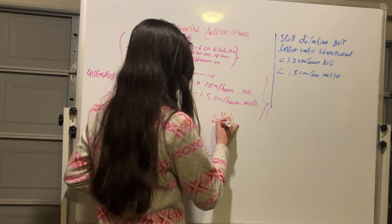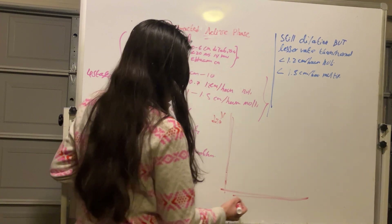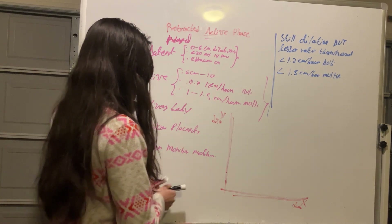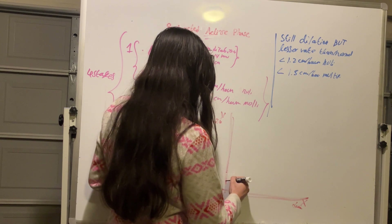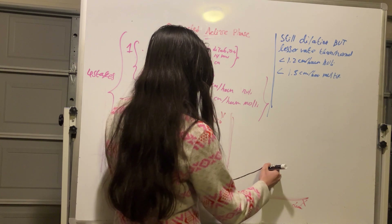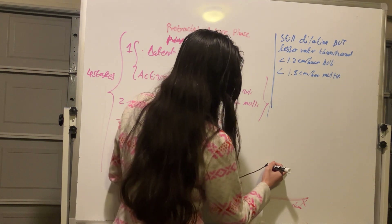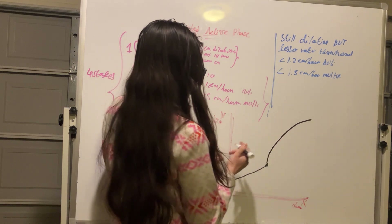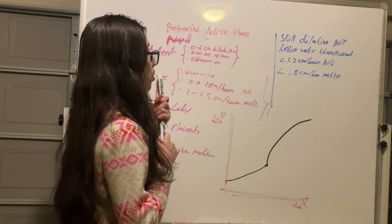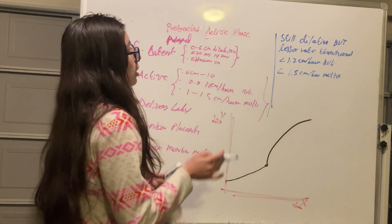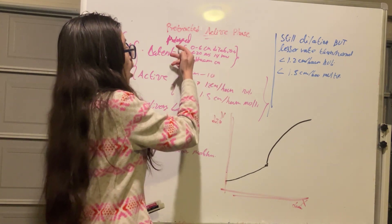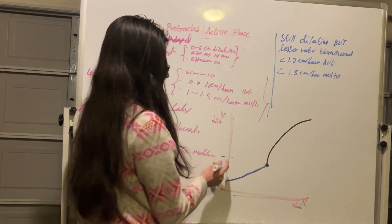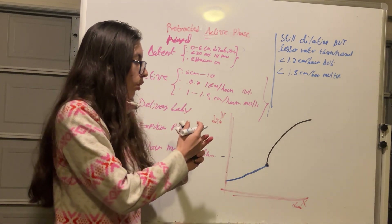If we graph this, the y-axis represents dilation of the cervix and the x-axis represents time. The normal graph is the Friedman curve — cervical dilation from 0 to 6 centimeters is the latent phase, and then the active phase begins where we continue having dilation at a higher rate.